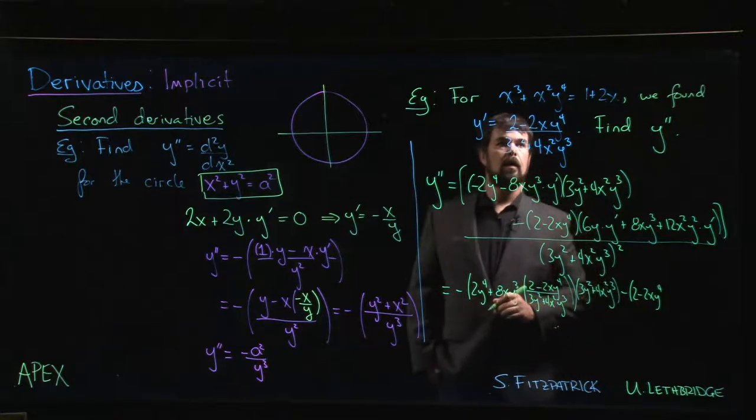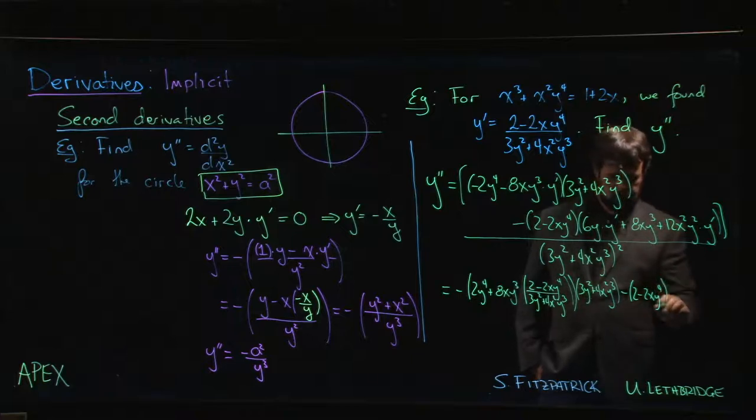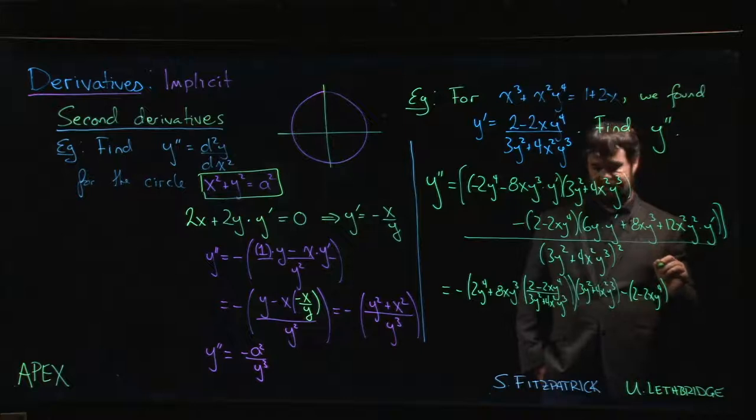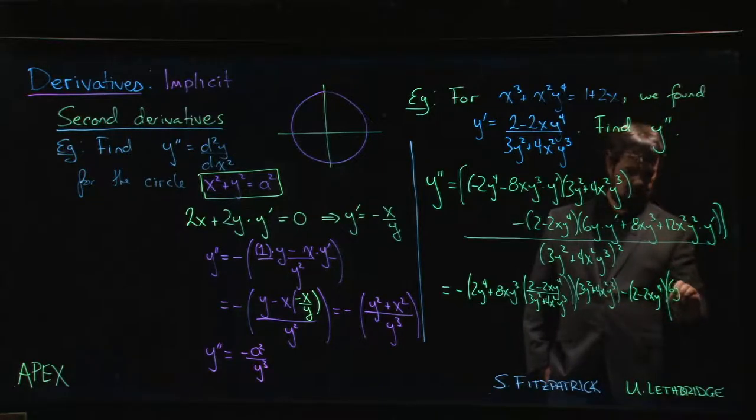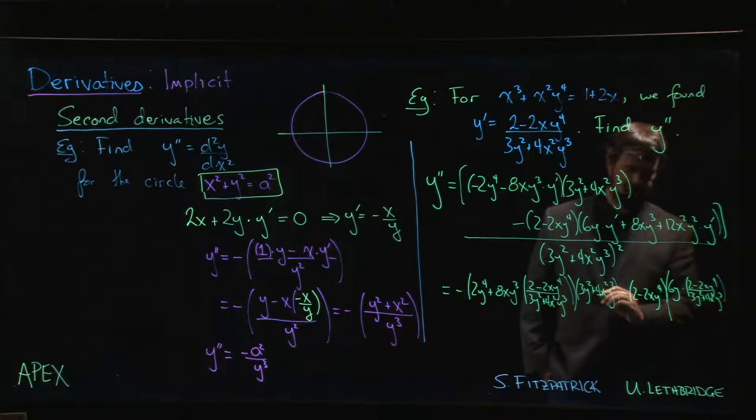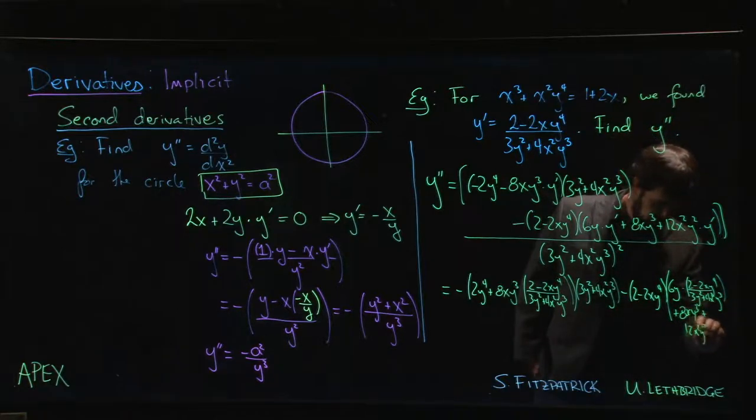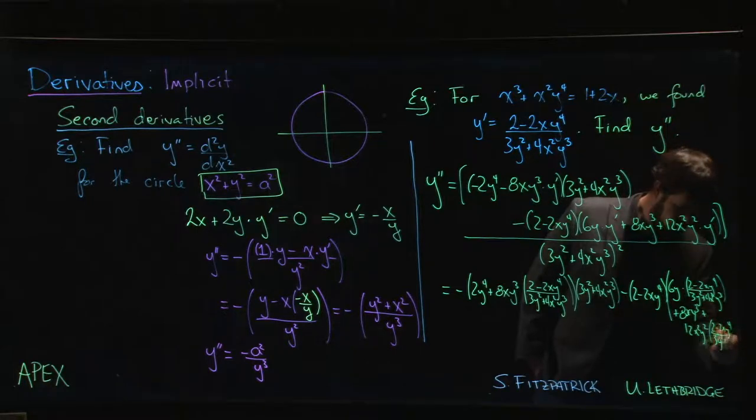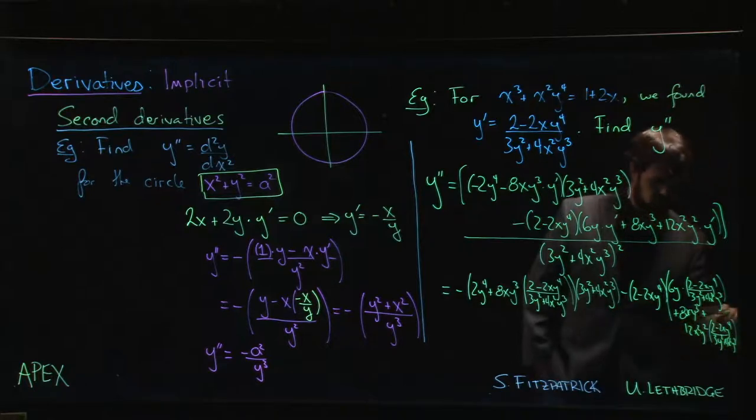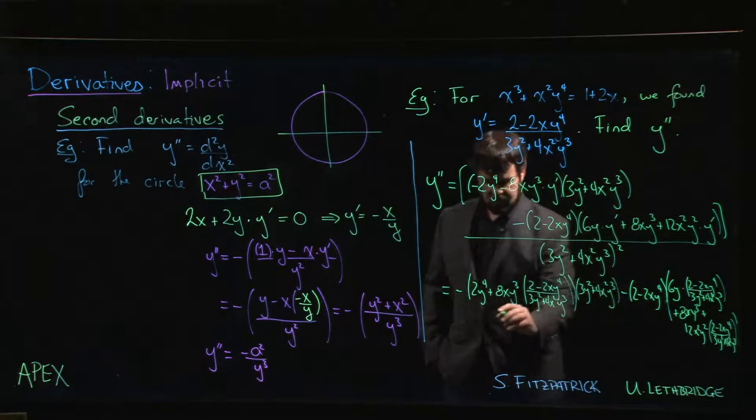Subtract, okay, now we got the second term. Two minus two x y to the fourth. All right, and put that in. Now we have all of this, again going to be a challenge squeezing this all, times six y times first derivative. Don't worry if you can't follow this one. The main point of this video is to illustrate that this is in general not something you want to be doing too often. Plus twelve x squared y squared times one more y prime. Oh boy, okay, all of that still the denominator.